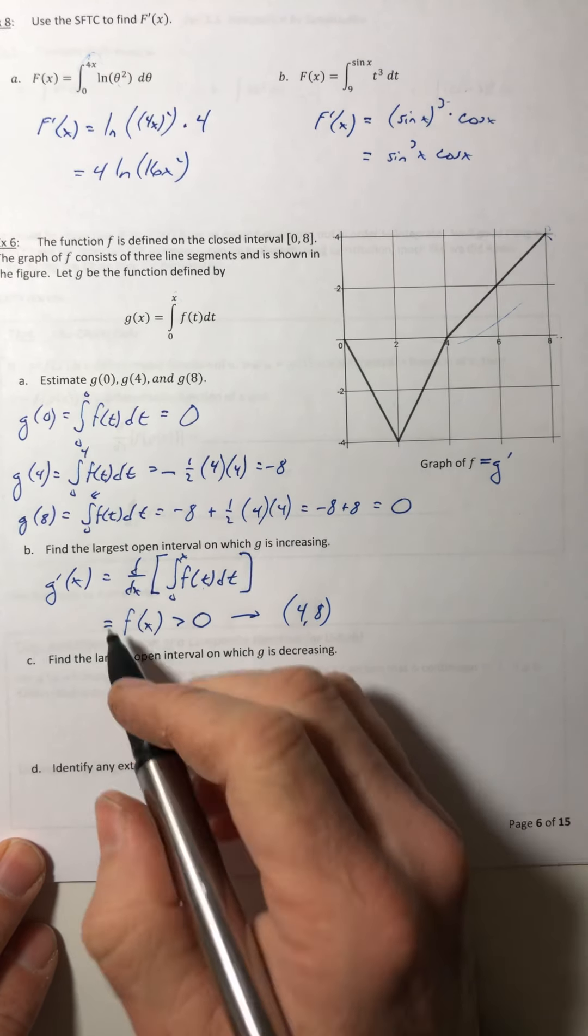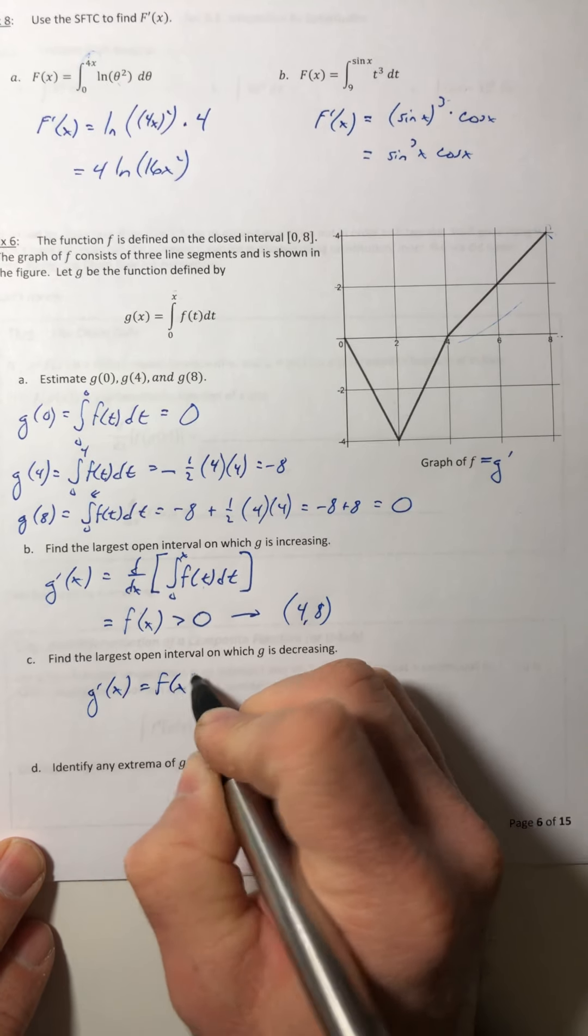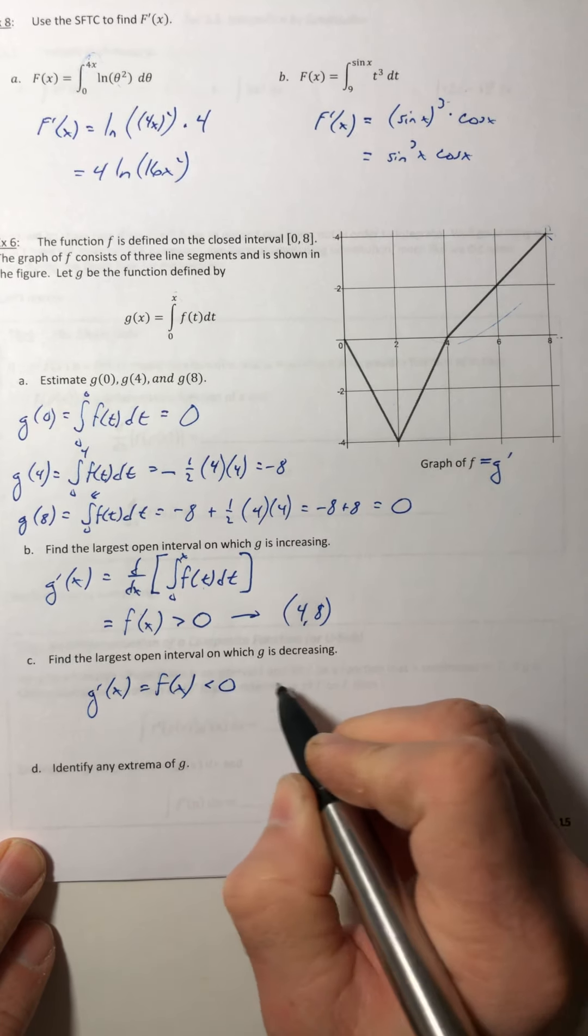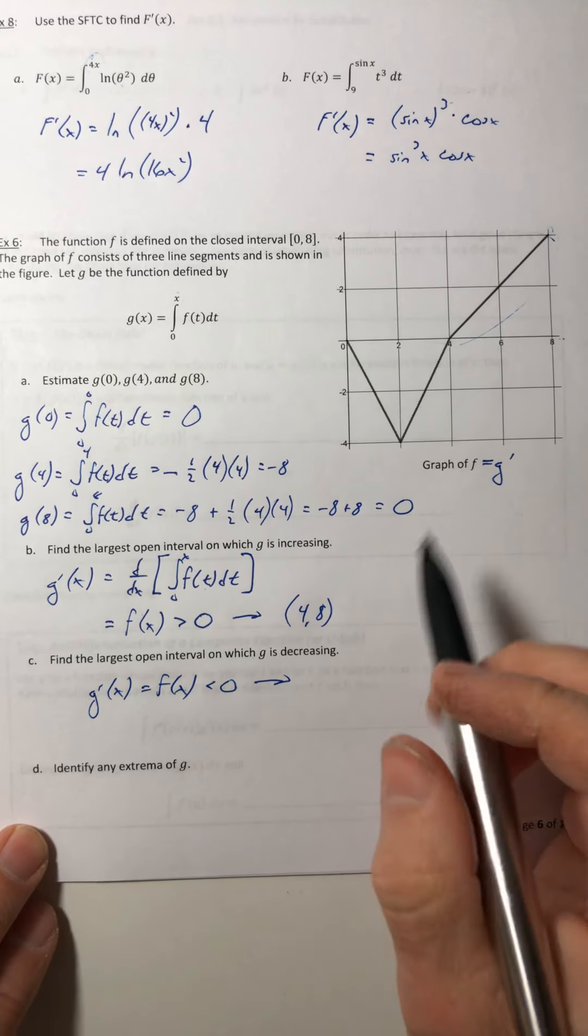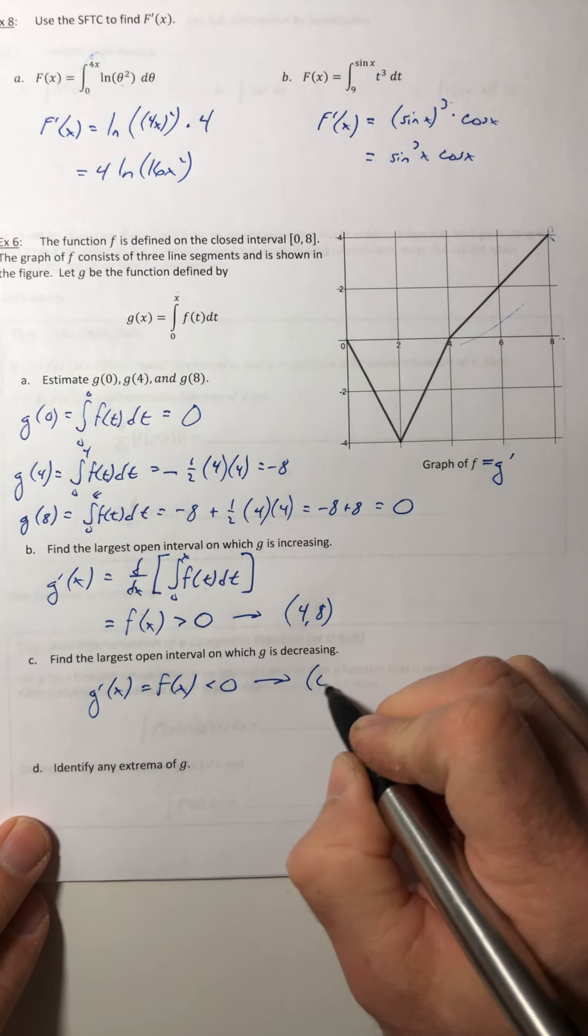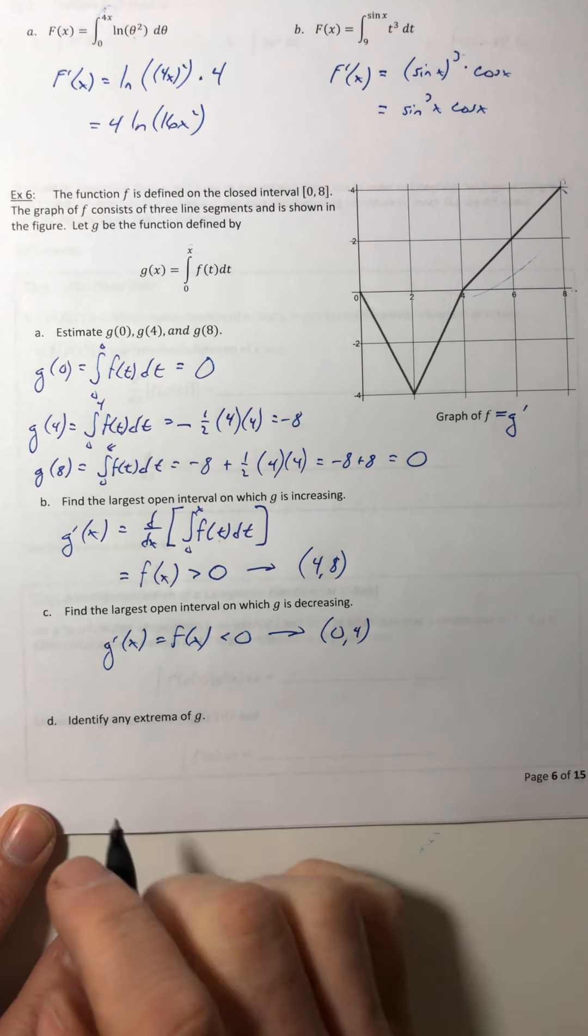So c, it's the reverse. Where is it decreasing? Well, now I want where the derivative, or in this case the f, is negative, or below the x-axis, and that would be this region in here. So from 0 to 4.